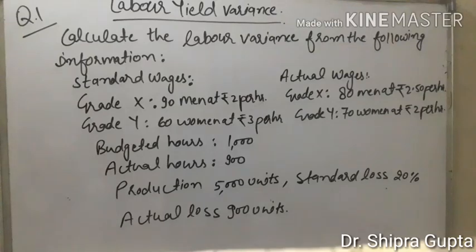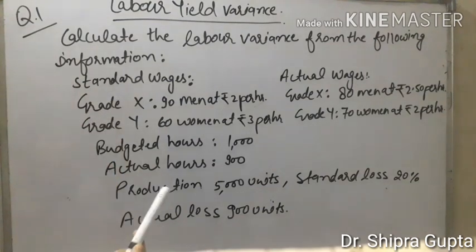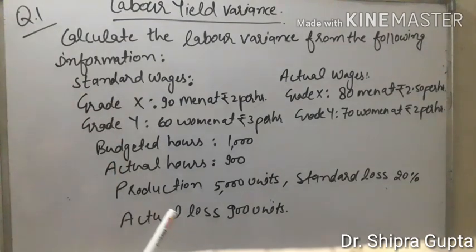Dear students, this is the last problem of labor variance. This problem is labor yield variance. This problem belongs to loss.